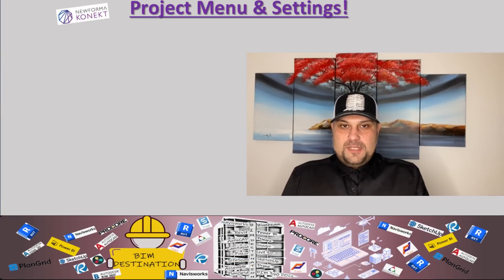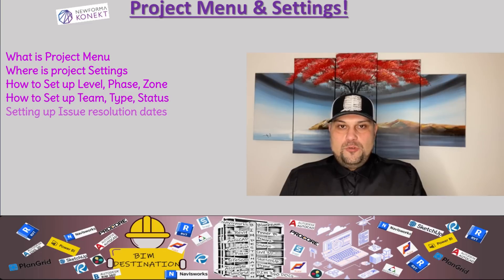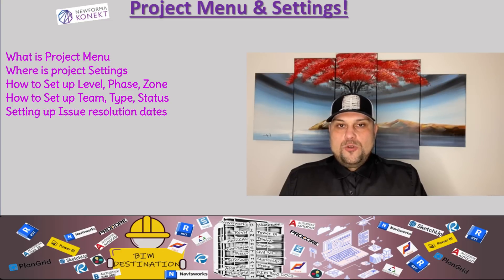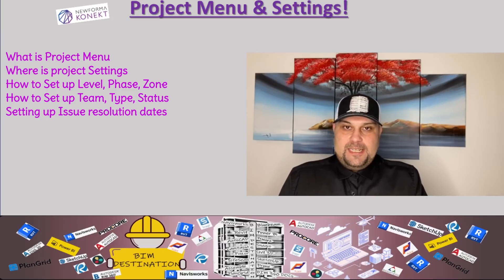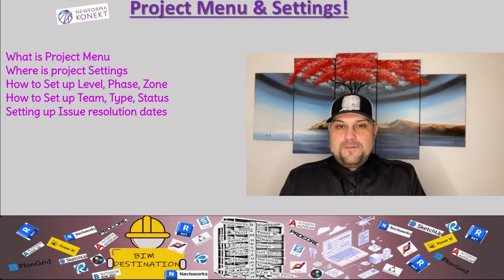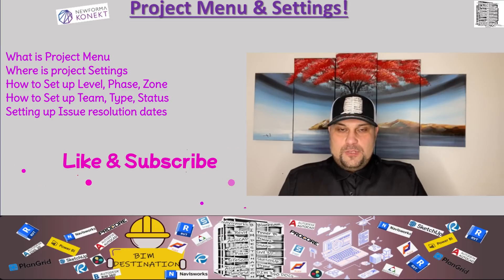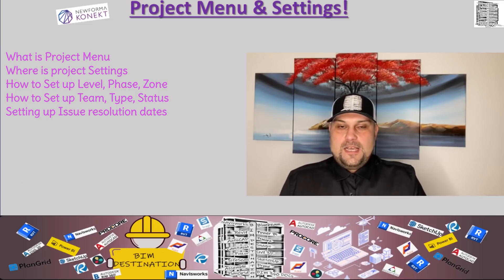Hello guys, my name is Armin. In today's episode, BIM Track New Format Connect tutorial, I want to show you how to set up your project. We do this in the web browser. I want to go through the process step by step — how to create levels, zones, phases, how to create teams, priorities for issues, and how to set the type of issues: trade, design, RFIs, and much more. This is a very important step for smooth communication between the design team, GC, and subs.